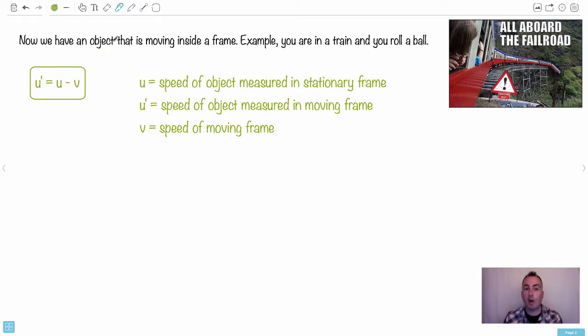For example, now we have an object that's moving within a frame. The example that's always used, it's so boring, but we'll use it anyway - a train. So you're going to have u' = u - v. Let's start with v. So v will be the speed of the train itself. Imagine the train is moving with respect to an observer who's not on the train. So maybe this is me here and I'm watching.